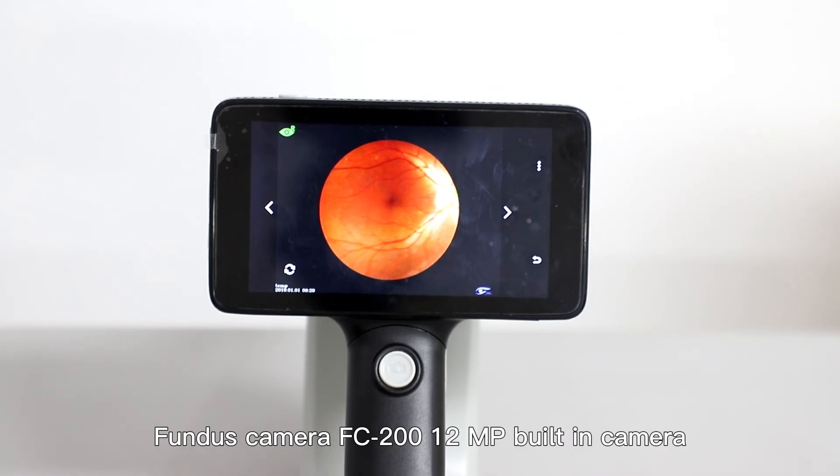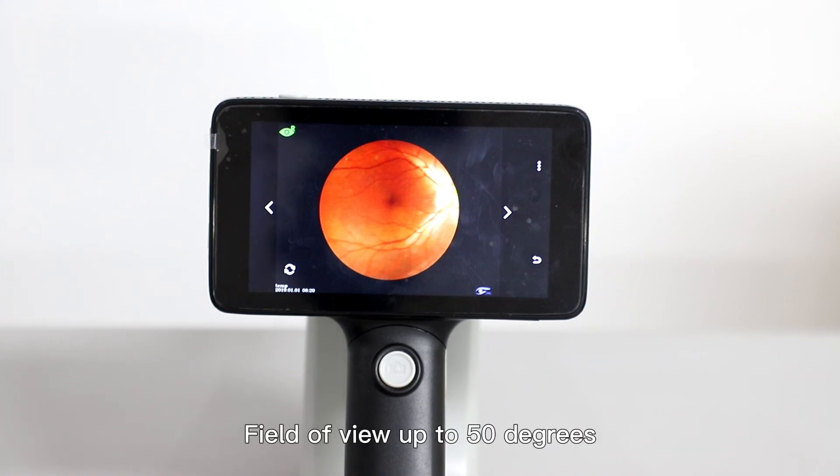Fender's camera FC200: 12 megapixel built-in camera, field of view up to 50 degrees, auto focus and auto image capturing, manual image capture also available, 4.7 inch touch screen, WiFi and Bluetooth available.